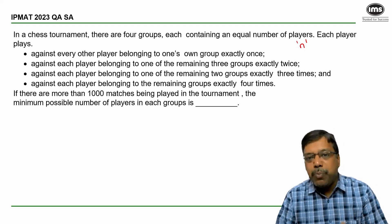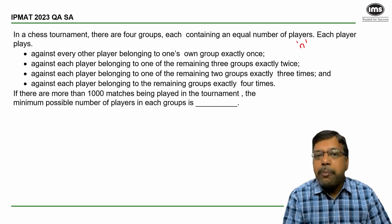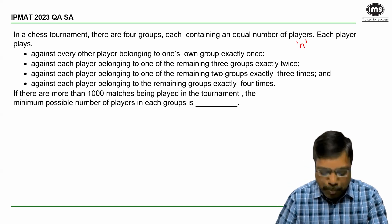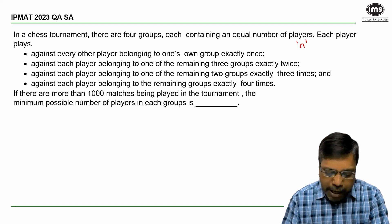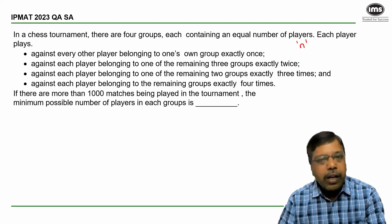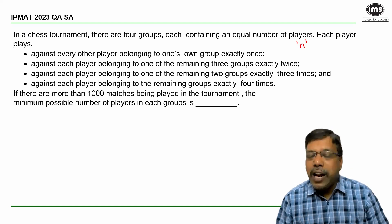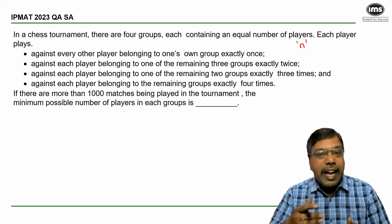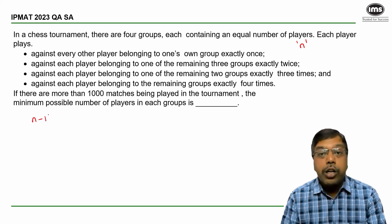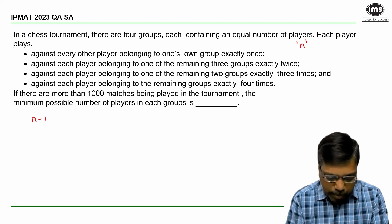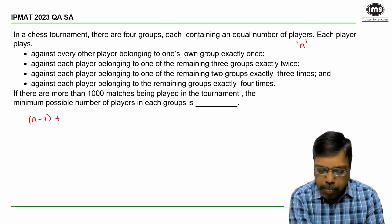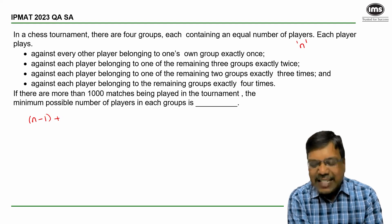Multiplying the number of matches played by one player by the total number of players will give me the total number of matches. Every player will play against every other player in their own group. If I am a player and my group has n people, I will play with every other person once, so the number of matches I play within my own group is n minus 1. I will also play against each player belonging to one of the remaining three groups exactly twice.